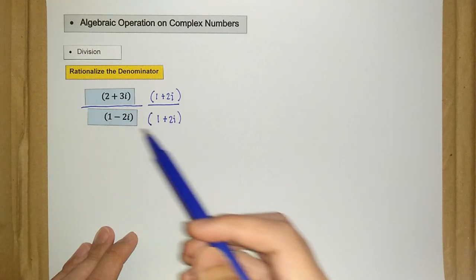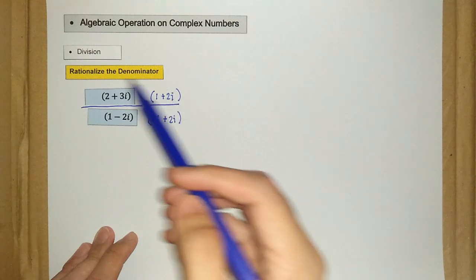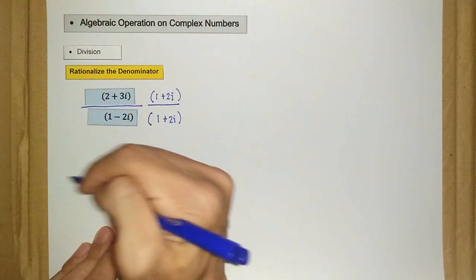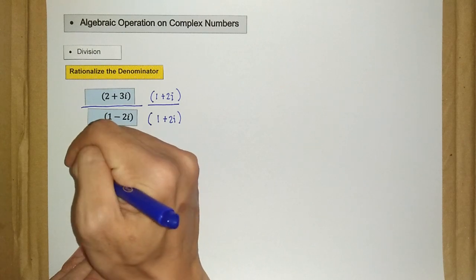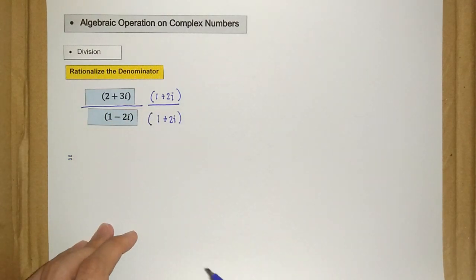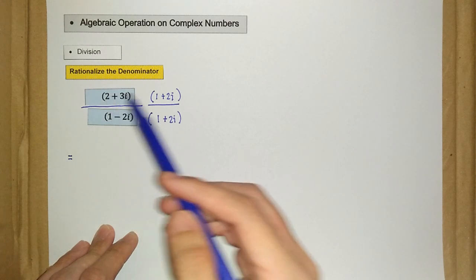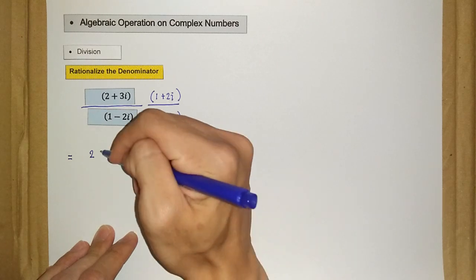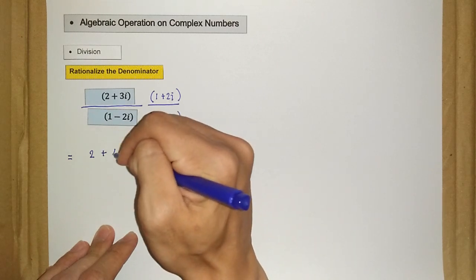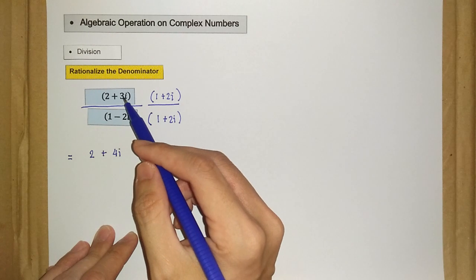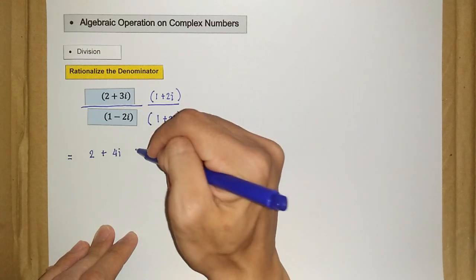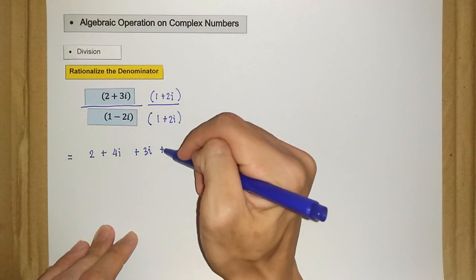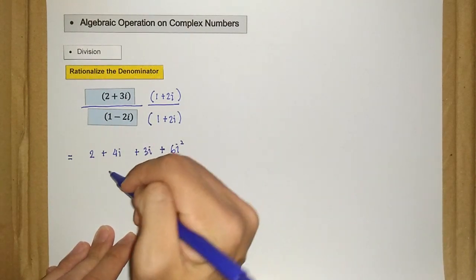We have two parts multiplying each other: the numerators multiply together and the denominators multiply together. For the numerator: 2 times 1 is 2, 2 times 2i is 4i, then 3i times 1 gives plus 3i, and next we have plus 6i squared.